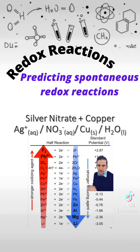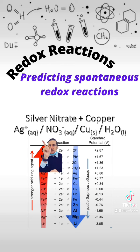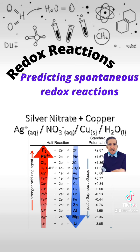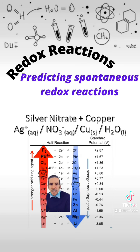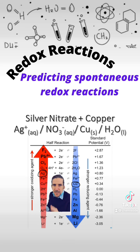Here's our second example: adding solid copper to silver nitrate. The first thing to be aware of is what is present. Silver nitrate is a mixture of silver ions and nitrate ions. We've got solid copper because we're adding copper to it, and water is present because it's an aqueous solution — it's always there if it's aqueous. Looking at the electrochemical series, you can see that the silver ions are above the solid copper, so we will see a reaction here.